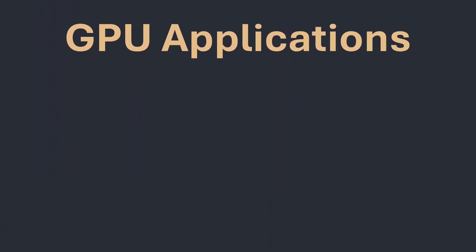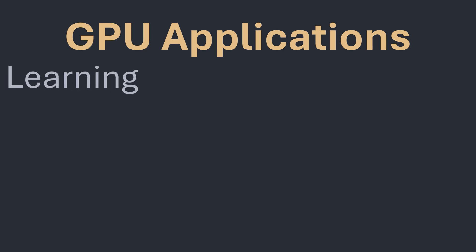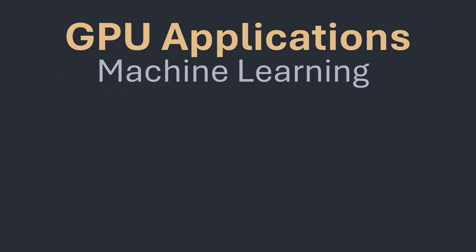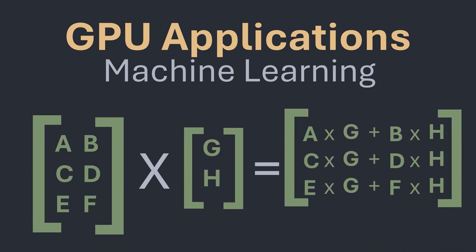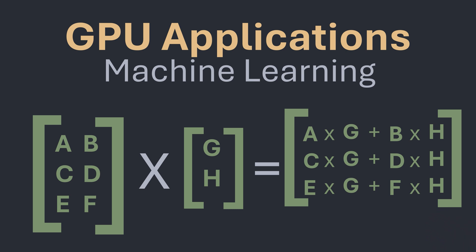There are many different uses for a graphics card — no longer are they just for gamers and video editors, they are now essential in various fields. A common application is machine learning and AI, where GPUs excel at the matrix operations required for training neural networks. It's worth noting that NVIDIA's CUDA technology has given them a significant edge in this field, making their GPUs particularly popular for AI applications.